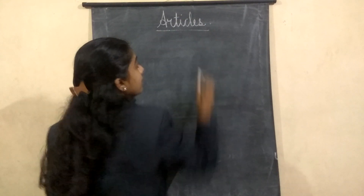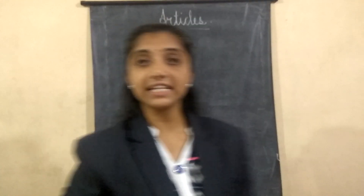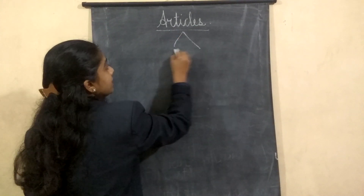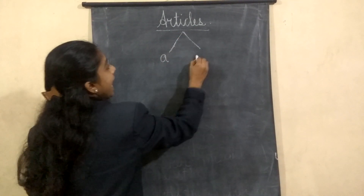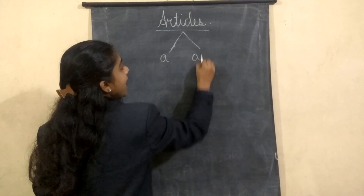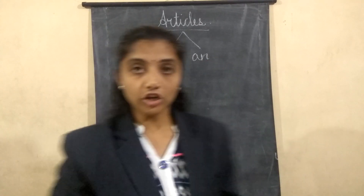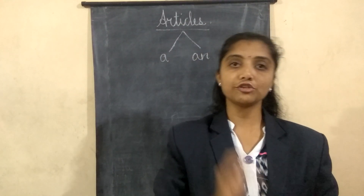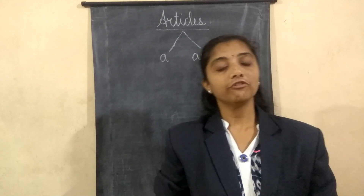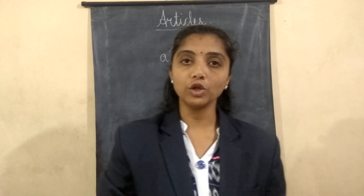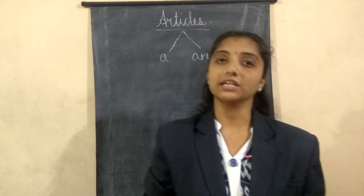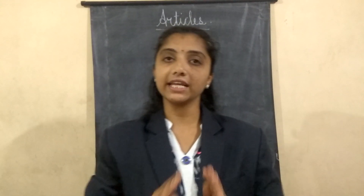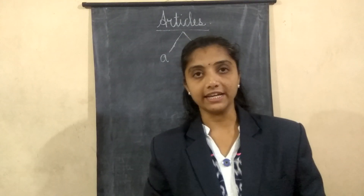Okay, so can you tell which are the articles? Articles are 2, that is 'a' and 'an'. In your textbook, 'the' is also given. Okay, 'the' is also an article. But for first standard, we are not going to study 'the'. So we are going to skip the article 'the' for first standard.